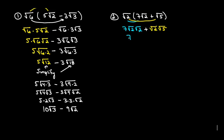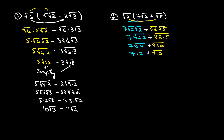So this first one gives us 7 times the square root of 2 times 2, and then we're going to add to it the square root of 2 times 5. So the first one is 7 times the square root of 4 plus the square root of 10. The square root of 4 is 2, and there's really nothing we can do with the square root of 10, so we'll leave that. That gives us a final answer of 14 plus the square root of 10.